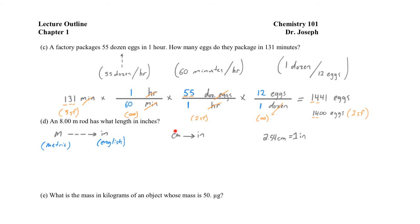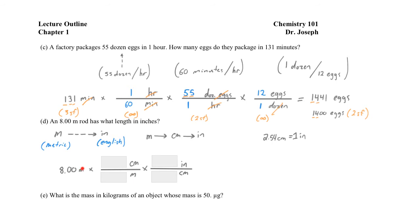Since we're given the starting point in meters, not centimeters, we need to first convert meters into centimeters and then into inches. We start with 8.00 meters and multiply by a conversion factor that transforms meters into centimeters — meters at the bottom, centimeters at the top. Then we apply the next conversion factor transforming centimeters into inches — centimeters at the bottom, inches at the top. Meters cancels with meters, centimeters with centimeters, leaving inches as the desired unit.